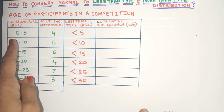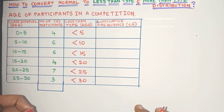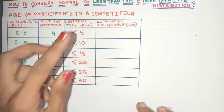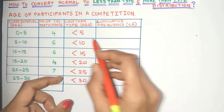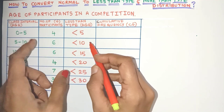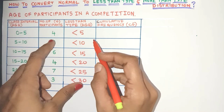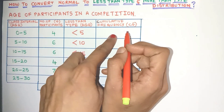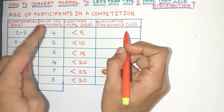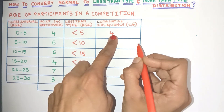Now the first class interval 0 to 5 has 4 participants, which means 4 participants have ages less than 5. Now is there any other participant with age less than 5? No — only these 4. There is no row before this. So we can easily say that the cumulative frequency here is equal to the frequency value. So we'll write 4.